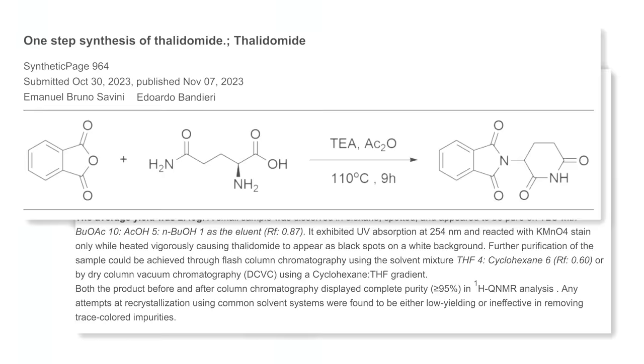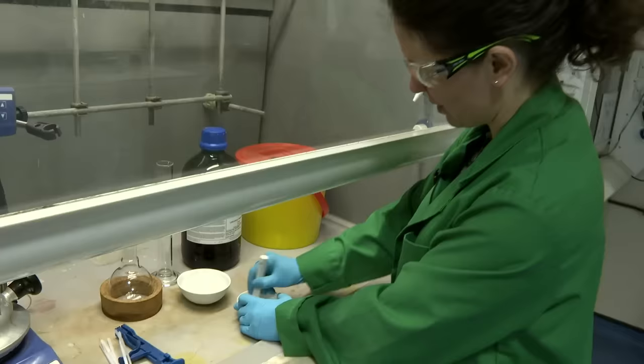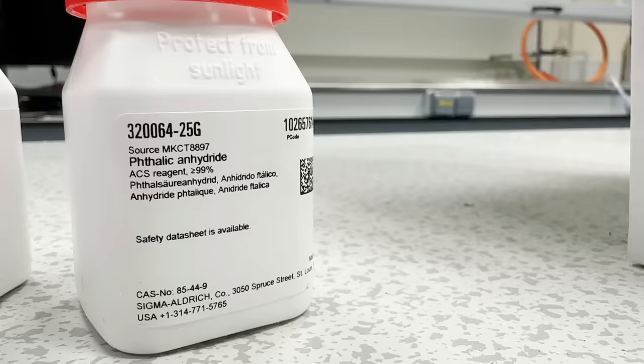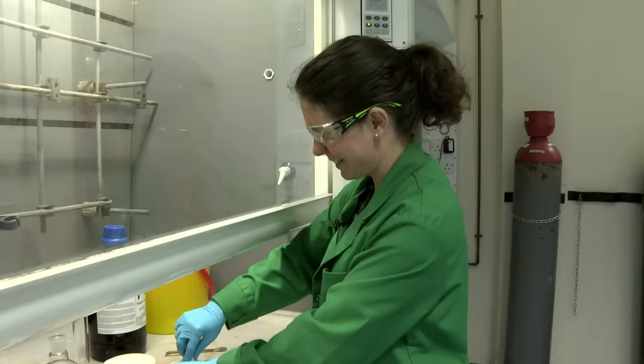And then the instructions say to pestle and mortar this for roughly two minutes. I'm assuming this helps to break down the phthalic anhydride, which is in rather large clumps here. Miriam, is a pestle and mortar common in labs these days?